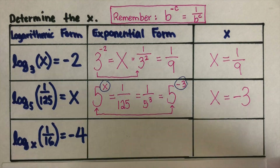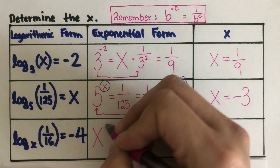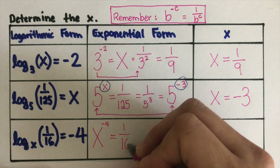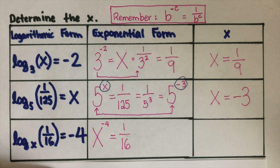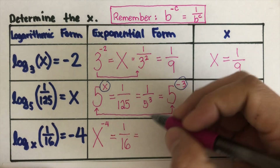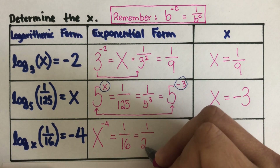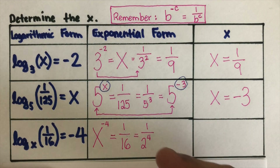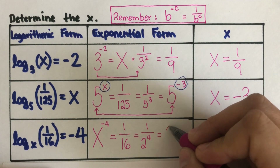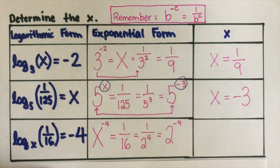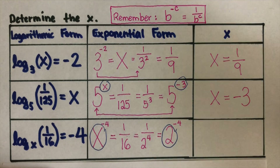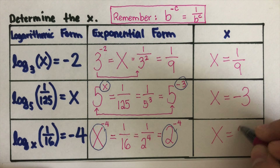So, let's have the last one. We have x to the power negative 4 equals 1 over 16. Let's figure out what number this is. We can write 1 over 16 as 1 over 2 to the power of 4, since 2 times 2 is 4, times 2 is 8, times 2 is 16. So we can change this to 2 to the exponent negative 4. Since they have the same exponent, our x is positive 2.